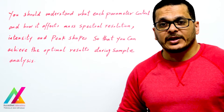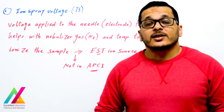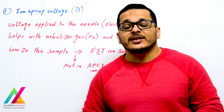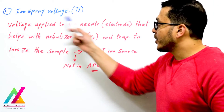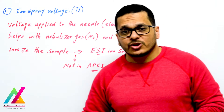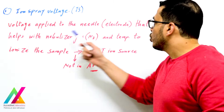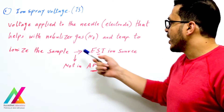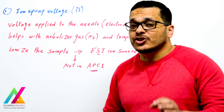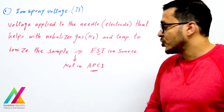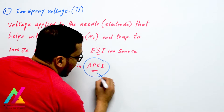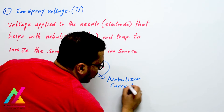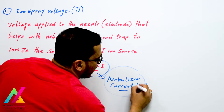The ion source is used for ionization of analyte molecules to produce ions, which are then transferred to the mass analyzer. For this process of ionization, we need nebulizer gas, temperature, and also ion spray voltage. Ion spray voltage is one parameter of your acquisition method — it is the voltage applied to the needle or electrode that helps the nebulizer gas and temperature to ionize sample molecules and produce ions. This applies in electrospray ionization; in atmospheric pressure chemical ionization, there is a nebulizer current applied to the corona discharge instead.